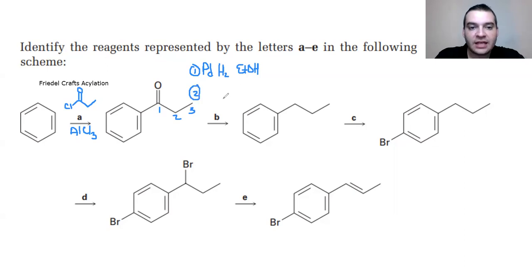Option number two is if we used a zinc mercury amalgam. That's when you use ZnHg with HCl. That's called the Clemmensen reduction, where we reduce this ketone down to the alkane.